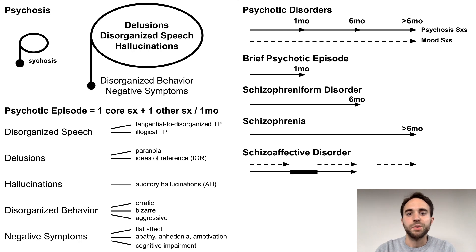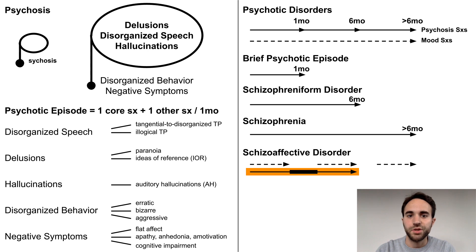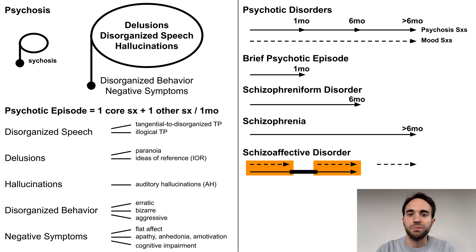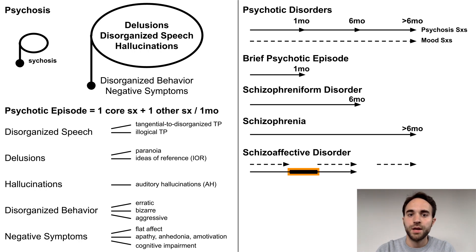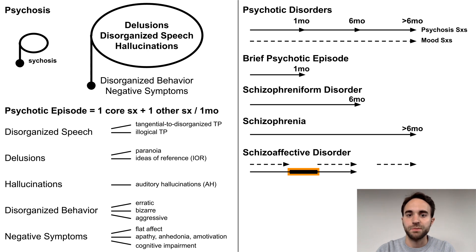Schizoaffective disorder involves both psychotic symptoms and mood symptoms, but the psychotic symptoms should be thought of as the underlying problem. There may be periods where both psychotic and mood symptoms are present, and there may be periods where only mood symptoms are present, but what differentiates schizoaffective disorder is that there has been at least one period of time where only psychotic symptoms were present.